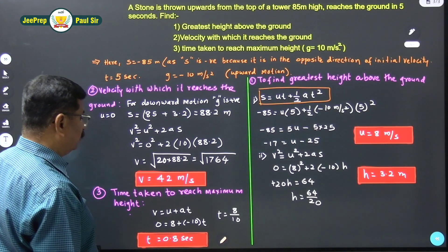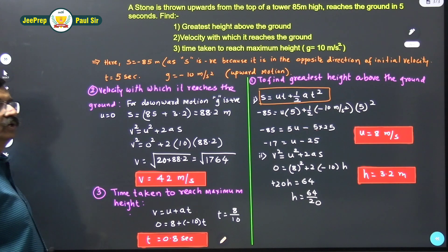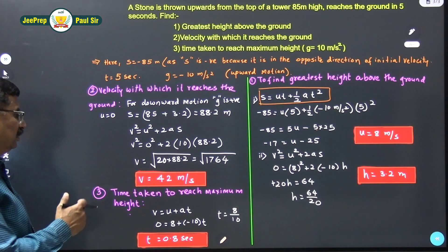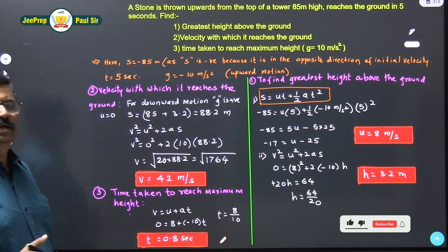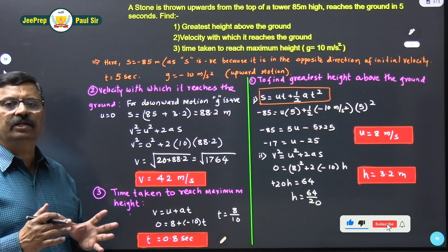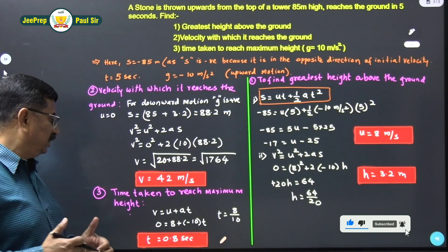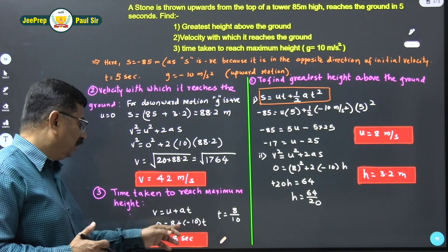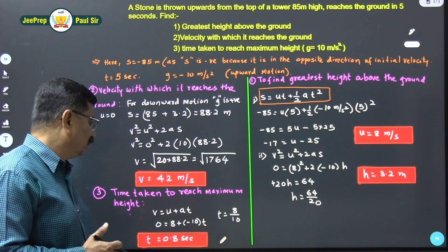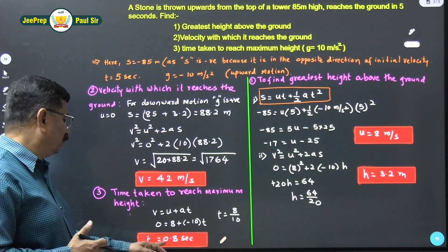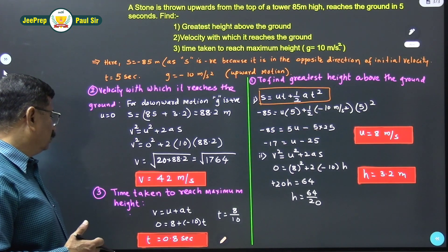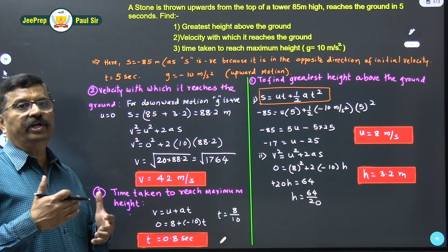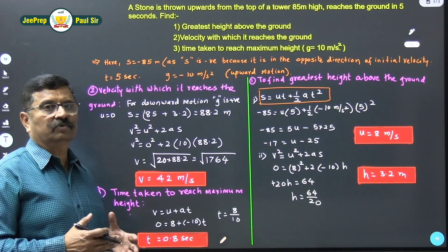Now let's find the time taken to reach the maximum height. Using the kinematic equation v = u + at: final velocity is 0, initial velocity is 8, and a = −10. So: 0 = 8 + (−10)×t, giving t = 0.8 seconds. The time taken to reach the maximum height is 0.8 seconds.